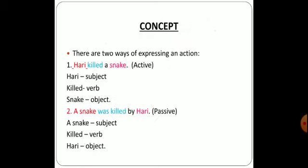Now let us understand the concept of active and passive voice. A sentence has been written. In active and passive, the sentence is written in a different manner, but the meaning of the sentence should not change — it should remain as it is. That is considered as active and passive voice. You can see: 'Hari killed a snake' — this is an active form. Why? Because Hari is the subject, killed becomes the verb, and snake becomes the object.